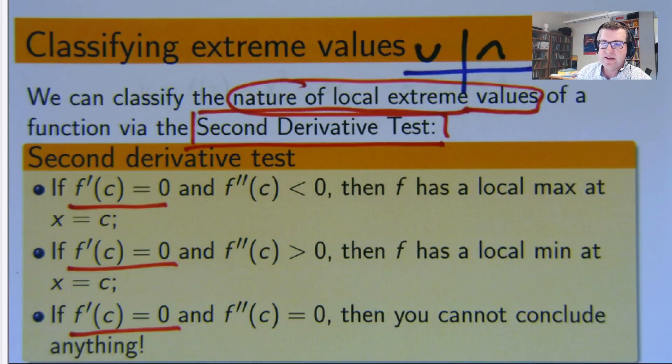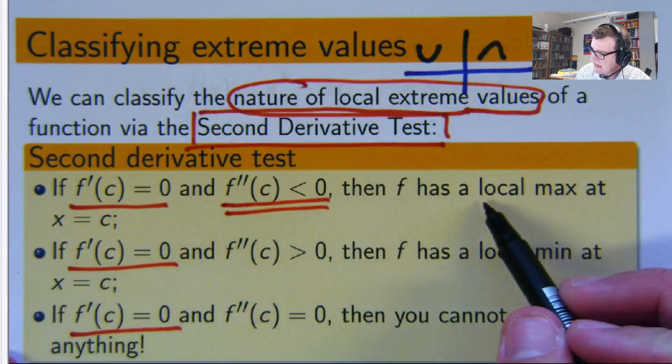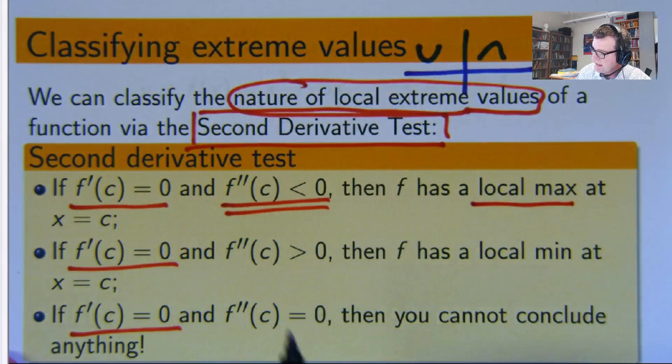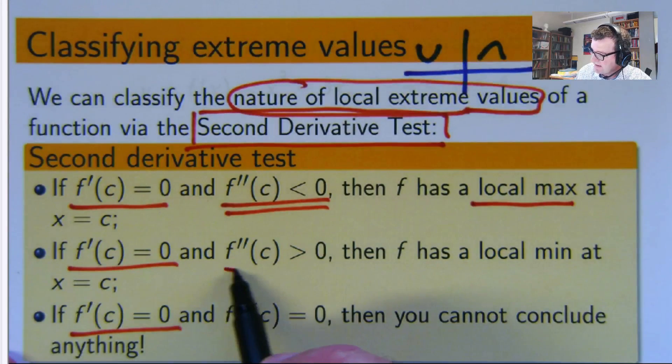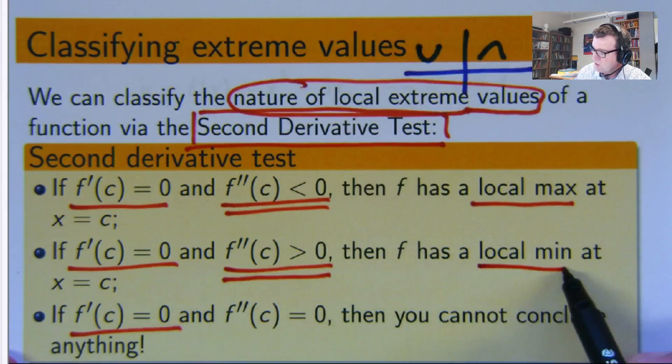The second derivative test says that if the first part is if the second derivative is negative, then f has a local max.